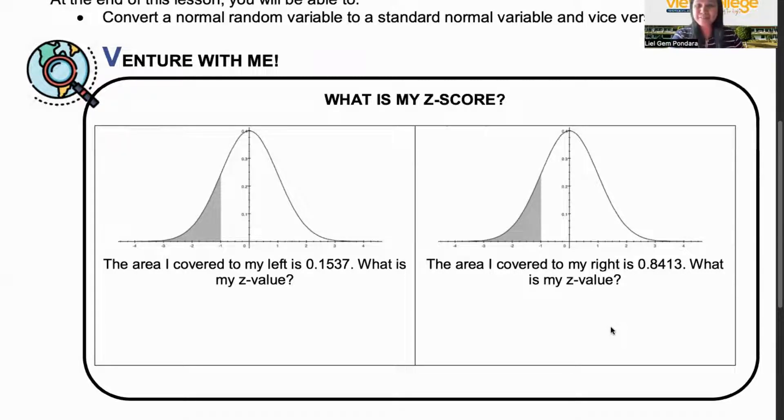In the previous lesson, we have learned how to find the area. Remember, area means probability, percentage, or it can be proportion. Now, we have given you the Z score and you have computed the area under the normal curve using your Z table. But this morning, you are going to compute the Z value. We do it the other way around. I'll give the area and you will compute the Z value.